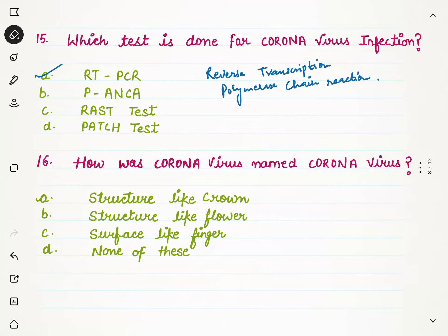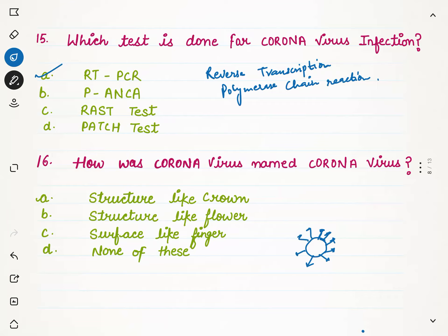We have four options: structure like crown, structure like flower, surface like finger, or none of these. As you may have seen in newspapers or news channels, the picture of corona is shown as a circle with spikes on top — like this. These spikes are protein spikes. If we think about a crown, it also has spikes like this. That is why it looks like the structure of a crown, so option A is the correct option — structure like crown.